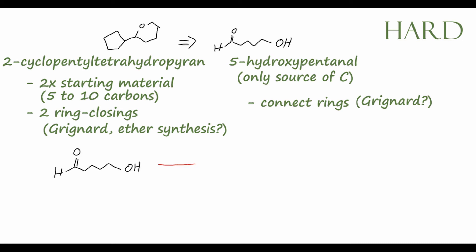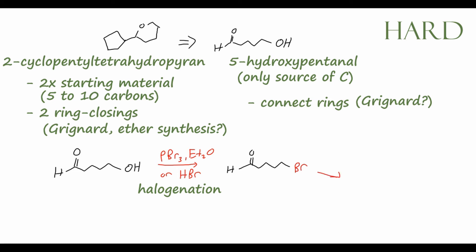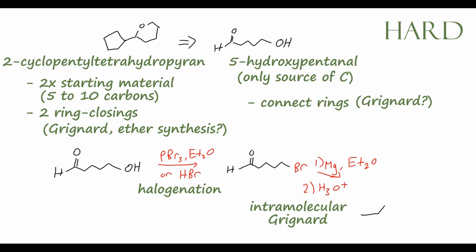This reaction is probably simpler to proceed in the forward direction, starting with the starting material. It's a 5-carbon molecule, so we can imagine trying to eventually get to a ring-closing reaction — an intramolecular ring-closing. We have a carbonyl group, so we can imagine performing a Grignard reaction, but we don't have a Grignard reagent yet. We can take this alcohol and halogenate it using phosphorus tribromide in diethyl ether — aqueous hydrobromic acid would also work — to give the bromide product. Then we make the Grignard reagent using magnesium metal in diethyl ether, followed by an acidic aqueous workup to close that ring, adding to the carbonyl and giving us the cyclopentanol intermediate.